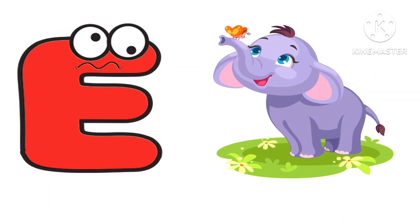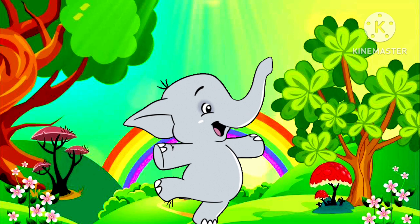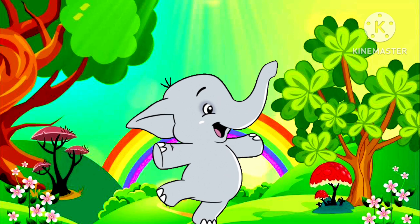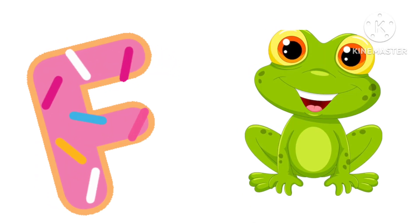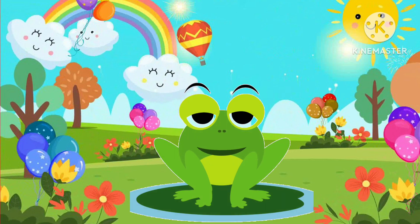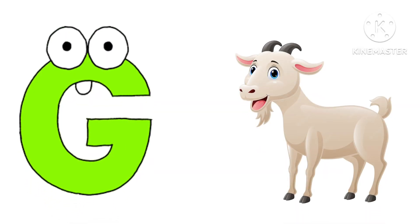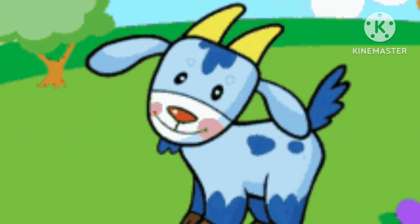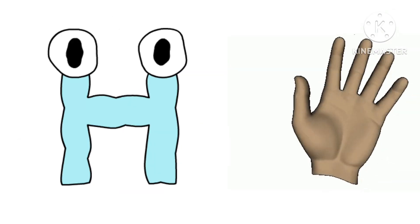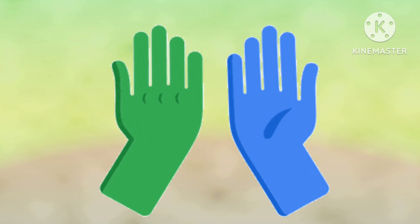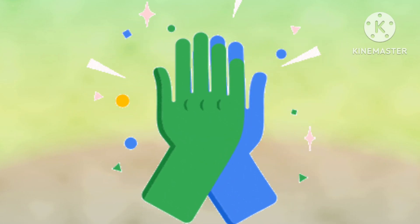E is for elephant, e-e-elephant. F is for frog, f-f-frog. G is for goat, g-g-goat. H is for hand, ha-ha-hand.